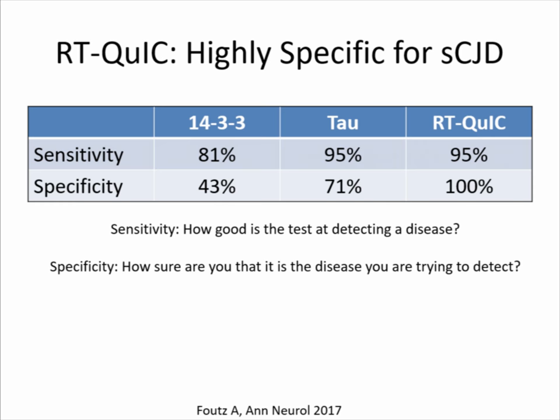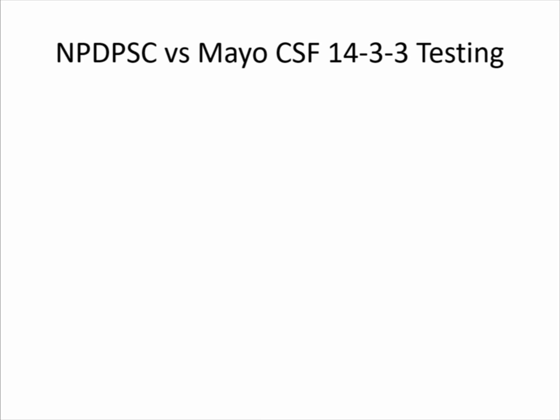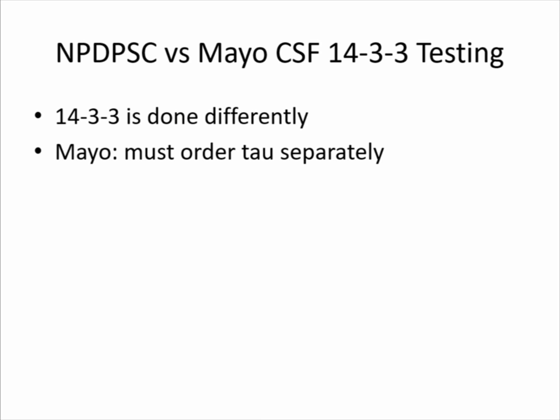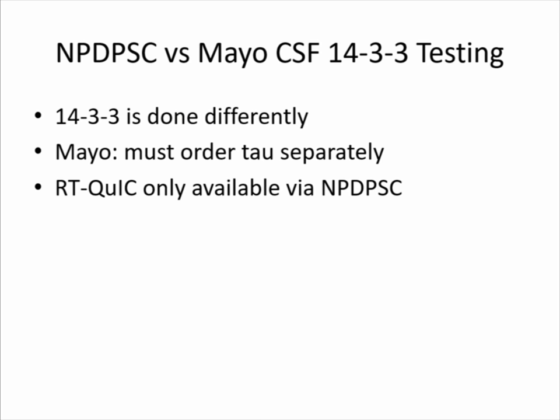There's an important difference between the surveillance center and the Mayo Clinic. When sending specimens to Mayo, the physician must order specific tests — they have to know to order 14-3-3, tau, and RT-QUIC is only available at the Prion Surveillance Center, not at Mayo. One benefit of the Surveillance Center is that clinicians don't need to know exactly what to order — they just need to indicate suspicion of prion disease, and we automatically run all three tests. If we have a positive test, we contact the clinician about the autopsy program funded through the CDC.